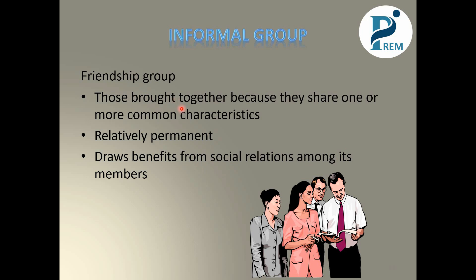Friendship Groups are brought together because they share one or more common characteristics. When you get people sharing common characteristics in a particular social setting, they meet. For example, friends from your building who meet in your society or complex — that's a friendship group. Your college group is a friendship group. This type of group is relatively permanent, because as long as people keep each other together — even through life — they remain connected.